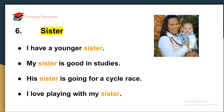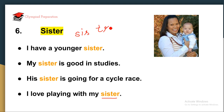The next word is 'sister.' Sister is also your sibling. Example sentences: 'I have a younger sister.' 'My sister is good in studies.' 'His sister is going for a cycle race.' 'I love playing with my sister.' Its pronunciation is 'sister.' To learn the spelling, we divide the word into smaller parts: SIS-TER — sister.